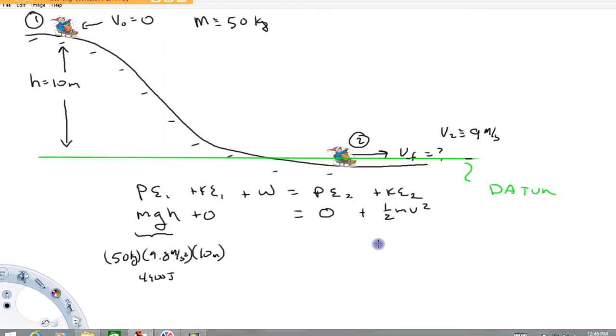And if I were to calculate a value here, that's going to be one-half times 50 kilograms times 9 meters per second squared. And then numerically we get out of that, I get about 2025 joules.